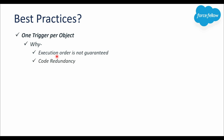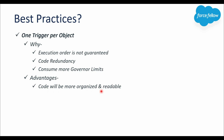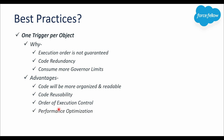Also, with multiple triggers on the same object, we might need to write the same piece of code multiple times, consuming more governor limits. If we create only one trigger per object, our code is more organized, readable, and we can achieve code reusability. We can also define execution order within a single trigger, writing logic to execute in a specific sequence, and overall performance will be better.